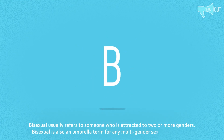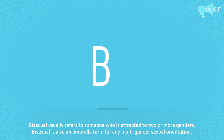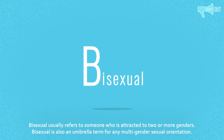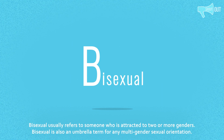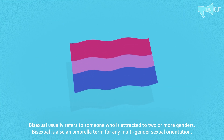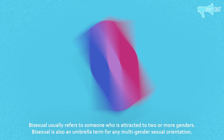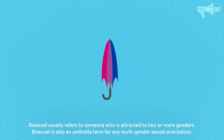Bisexual usually refers to someone who is attracted to two or more genders. Bisexual is also an umbrella term for any multi-gender sexual orientation.